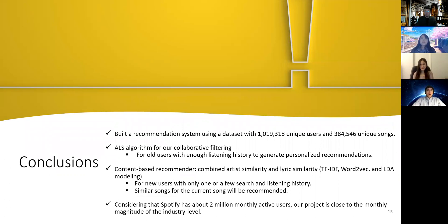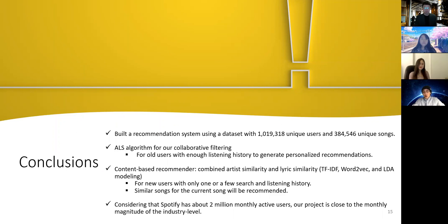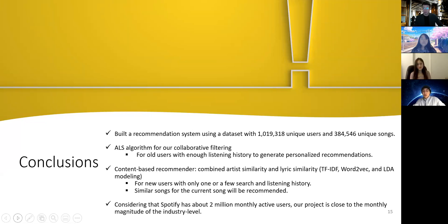To conclude, our project built a recommendation system using a dataset with 1 million unique users and nearly 400,000 unique songs. We used the ALS algorithm for the collaborative filtering part for existing users with enough listening history to generate personalized recommendations. We also considered the cold start problem, using a content-based recommender that combines artist similarity and lyrics similarity to recommend new songs to new users. Considering that Spotify has about 2 million monthly active users, our project is close to the monthly magnitude of industry level.